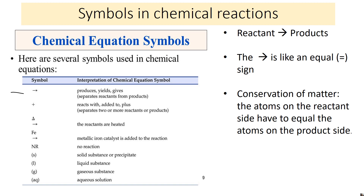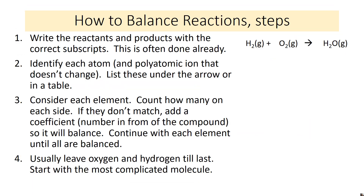Conservation of matter always applies with chemical reactions, so the number of atoms on the reactant side has to equal the number of atoms on the product side. This brings us to the idea of balancing a reaction. The point of balancing a reaction is to make sure you're not creating or destroying atoms — you start and end with the same atoms.